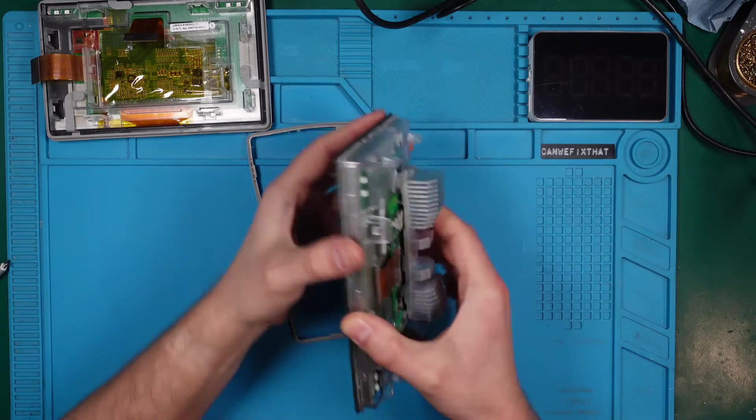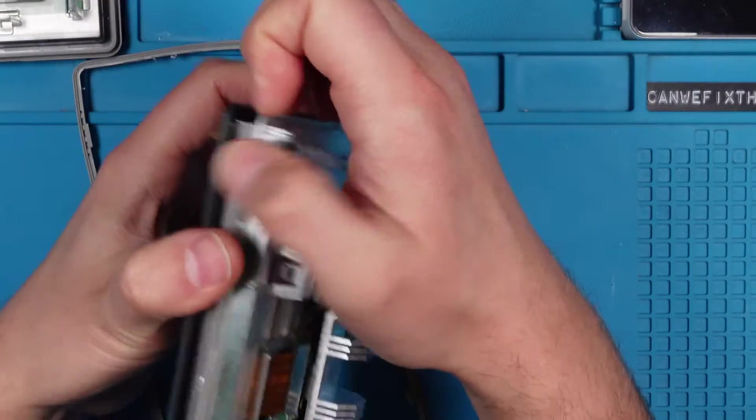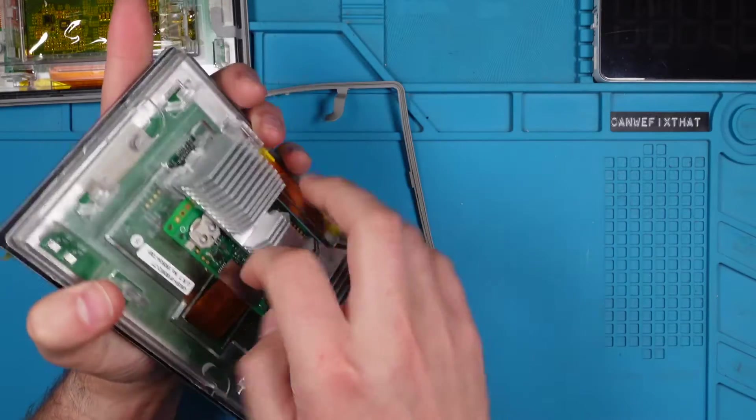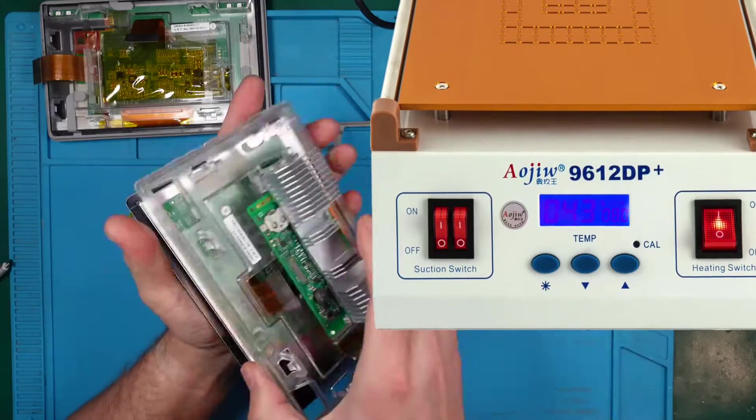In the previous video about this repair, I mentioned that the screen unit is welded. That was not correct. It was actually glued together and with some heat from my trusty heat plate, I was able to lift it up.